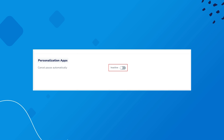Once everything is set up correctly, you can enable automatic approval by clicking on the gear icon next to your Shopify shop in the cockpit and selecting the option under personalization apps.